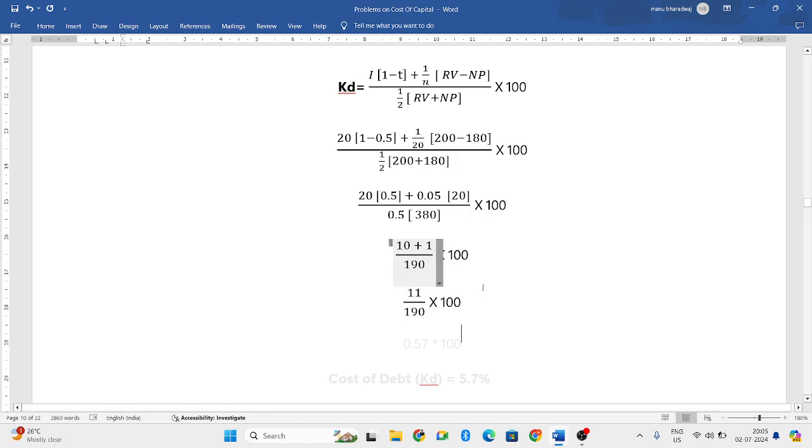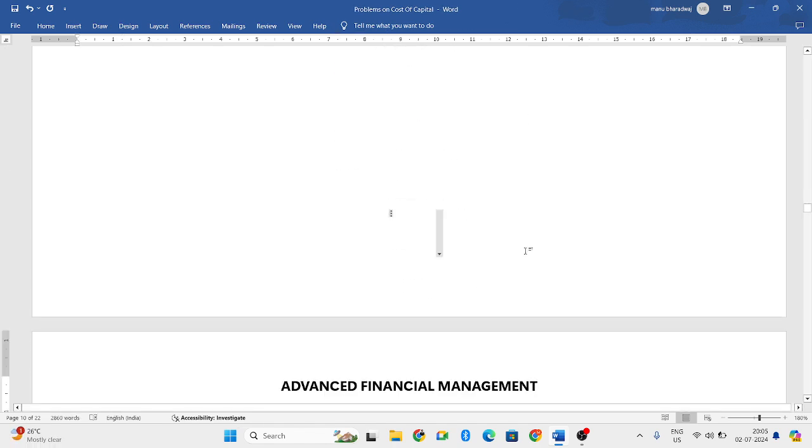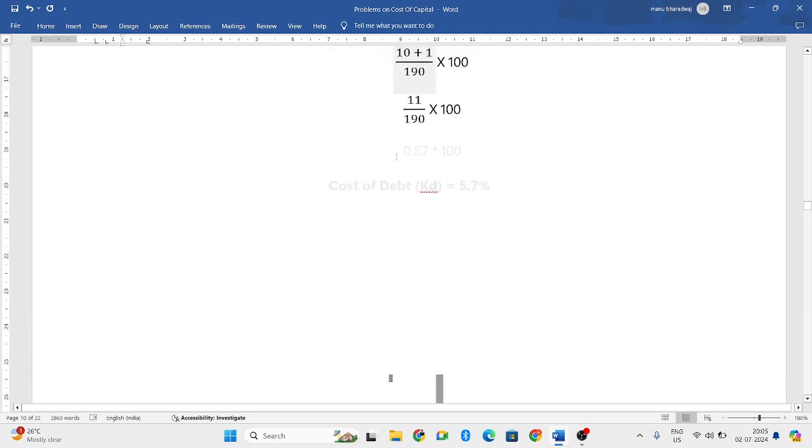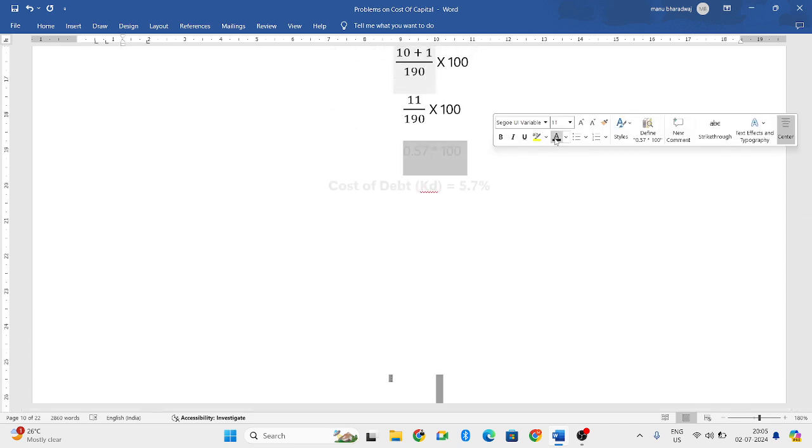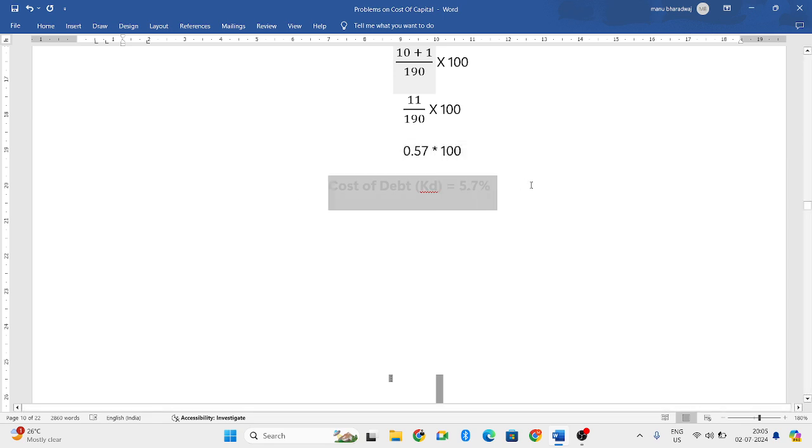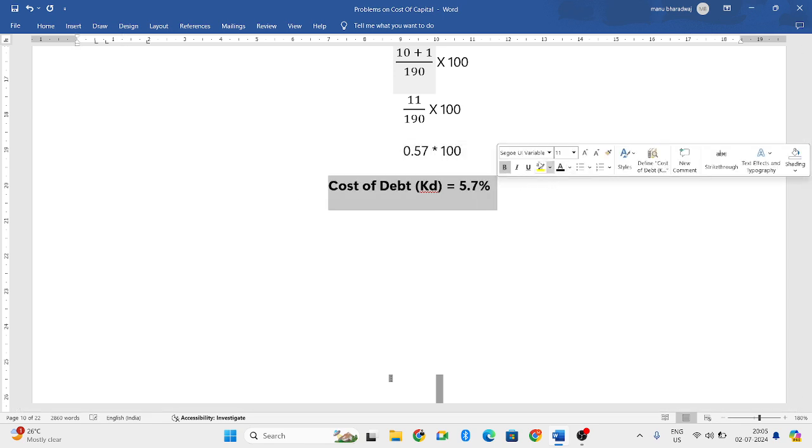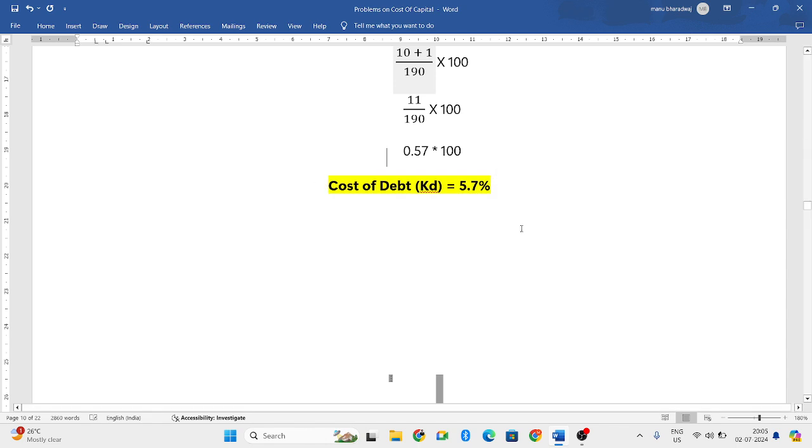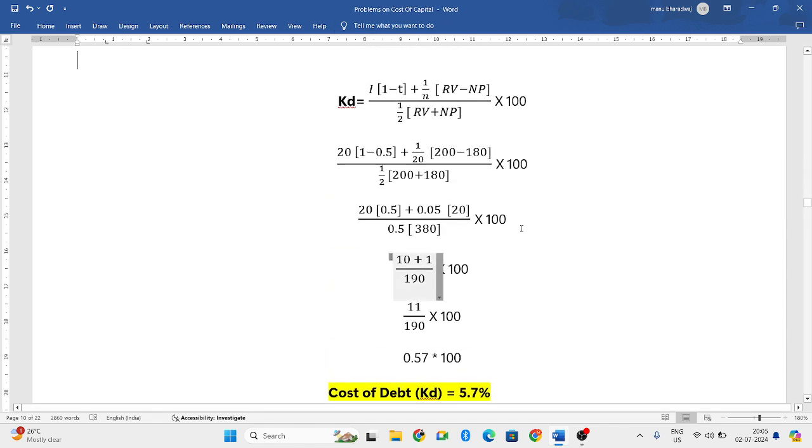Finally, 11 divided by 190 will be 0.057 into 100. So when you multiply, you get the cost of debt that is 5.7%.